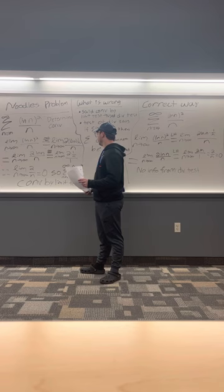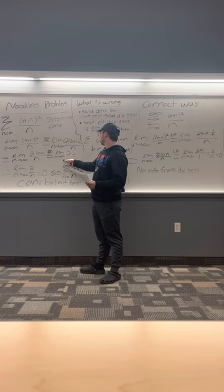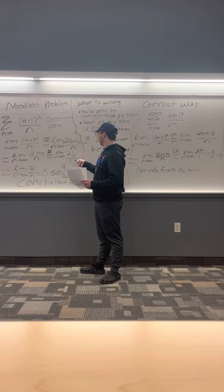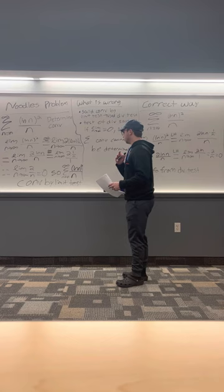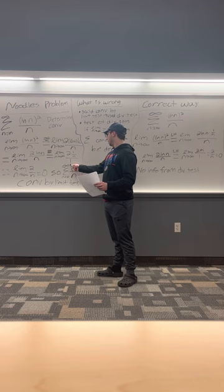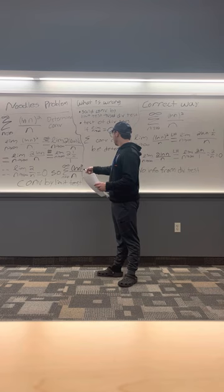Once again he used L'Hôpital's rule, and it's now equal to the limit as n goes to infinity of 2 times 1 over n, over 1, which is equivalent to the limit of 2 over n, and the limit of that is equal to zero. He then said the series from n=10 to infinity of natural log of n squared over n converges by the limit test.